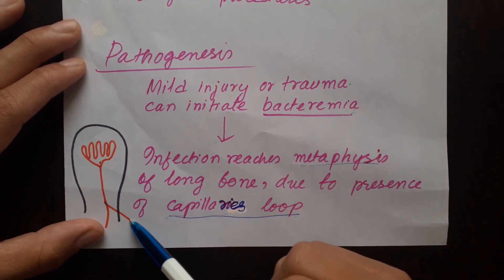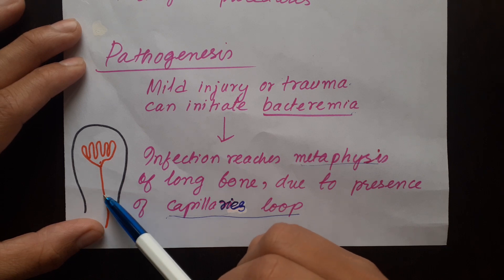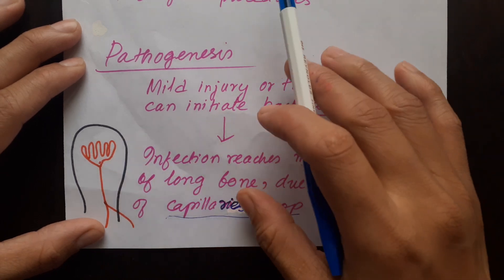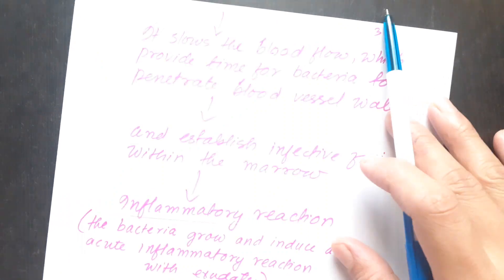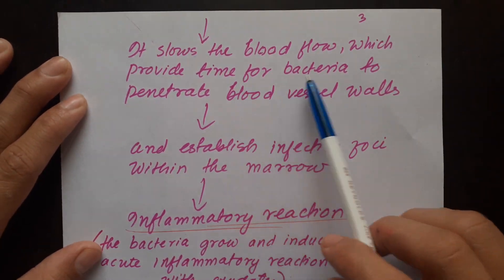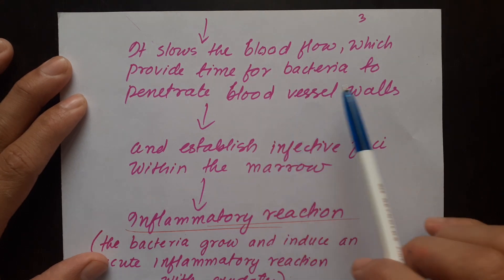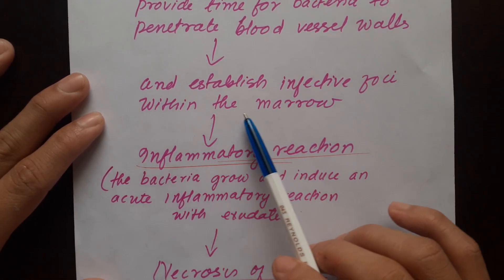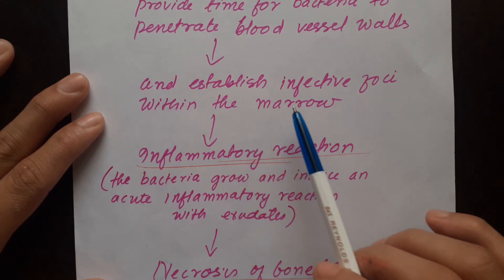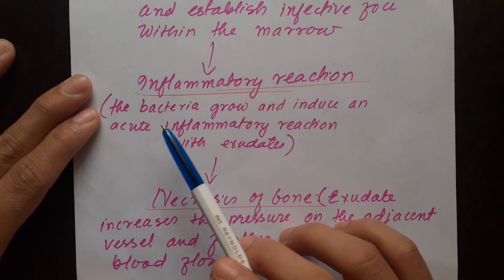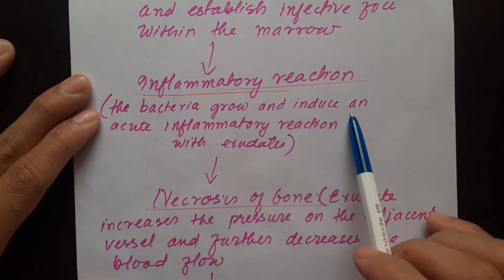In the metaphysis area there is a loop of capillaries. Suppose this is the nutrient artery, which comes with an ascending part, and then in the metaphysis area there is a loop of capillaries. Due to this presence of the capillary loop, it slows the blood flow, which provides time for bacteria to penetrate blood vessel walls and establish infective foci within the marrow.